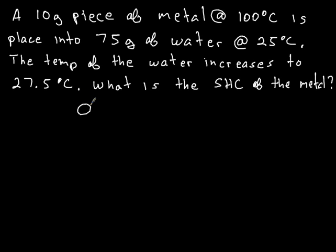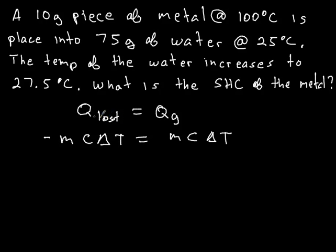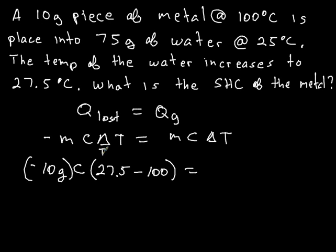This is a heat lost equals heat gained problem. It's going to be negative MC delta T equals MC delta T. What is losing heat? That's the metal. So, the mass of the metal is 10 grams. The C of the metal is our unknown. That's what we're looking for, the heat capacity of the metal. And the delta T, the T final was 27.5. And the T initial was 100. So, delta T is always going to be Tf minus Ti.